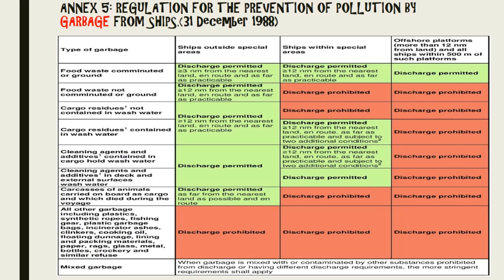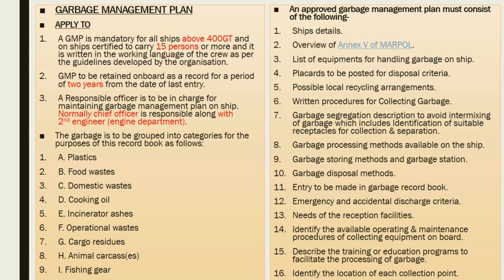Annexure 5 — regulation for the prevention of pollution by garbage from ships. Under this we have different categories of garbage and different discharge criteria outside the special area and inside the special area, presented in chart form. Going through this table 4 to 5 times will help you recognize and remember these points for surveyors. Under this annexure we also have the garbage management plan.